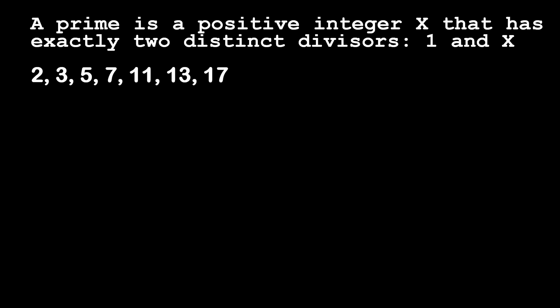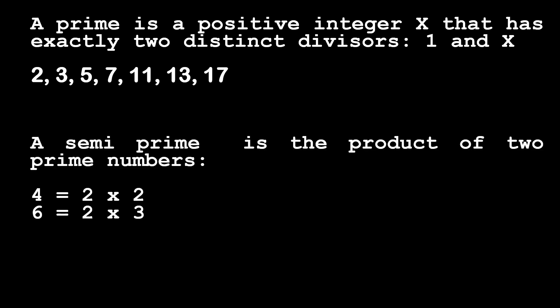A prime number is a positive integer that has exactly two distinct divisors: one and itself. For example, the numbers 2, 3, 5, 7, 11, 13, and 17 are prime numbers. A semiprime number is the product of two prime numbers. For example, the number 4 is the product of 2 times 2, so 4 is a semiprime. Similarly, 6 equals 2 times 3, and their product is also considered a semiprime number.